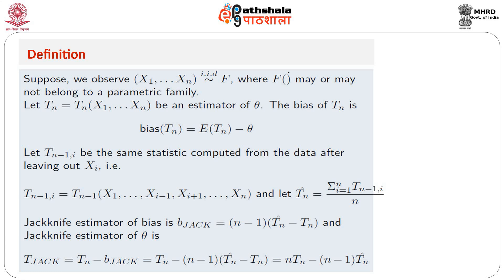A jackknife estimator of the bias is then defined as B_jack = (n−1)(T̂_n − T_n), and a jackknife estimator of theta is T_jack = T_n − B_jack. On simple algebra, this comes out to be T_jack = n·T_n − (n−1)·T̂_n.